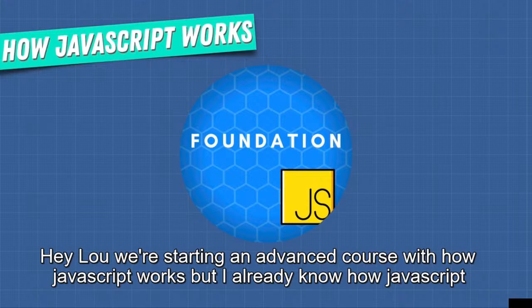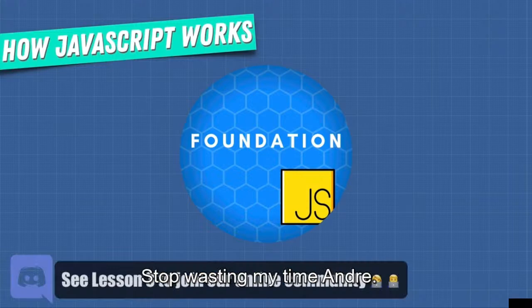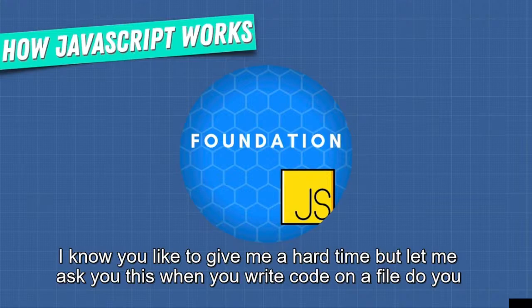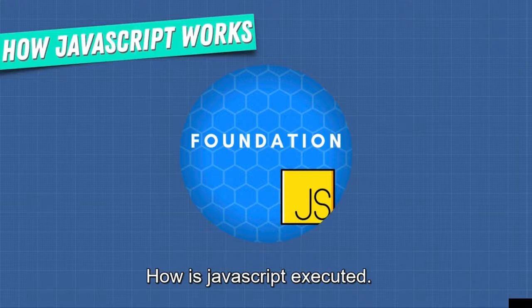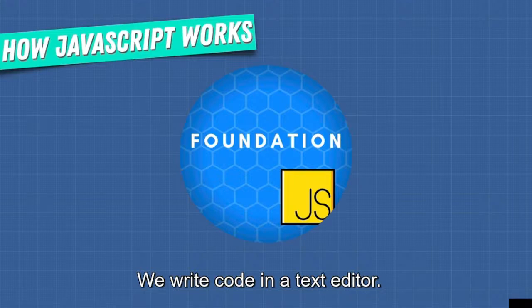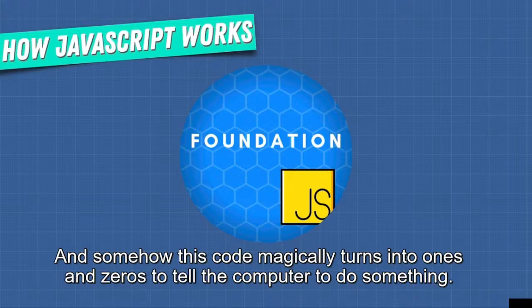We're starting an advanced course with how JavaScript works. But I already know how JavaScript works — I write JavaScript every day, stop wasting my time! I know you like to give me a hard time, but let me ask you this: when you write code in a file, do you know what happens? How does the browser read this file? How is JavaScript executed? How does Node.js work? We write code in a text editor and somehow this code magically turns into ones and zeros to tell the computer to do something.